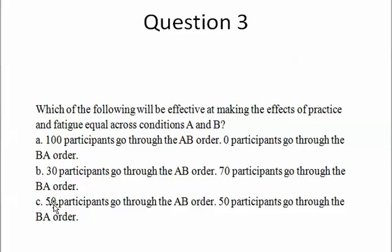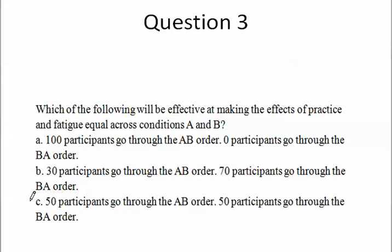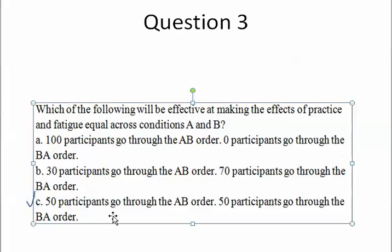But what about choice C? In this situation, 50 participants are experiencing practice and fatigue in condition B at time 2, and 50 participants are experiencing practice and fatigue in condition A at time 2. Which means that the number of participants experiencing practice and fatigue in condition B is the same as in condition A. So practice and fatigue is having an equal effect on conditions A and B. C is correct.